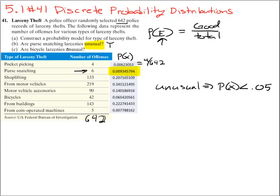And then bicycle larcenies. So that is down here, bicycle larcenies. And you can see that that is greater than 5%, so that is a no.